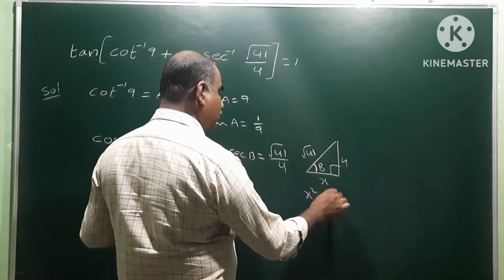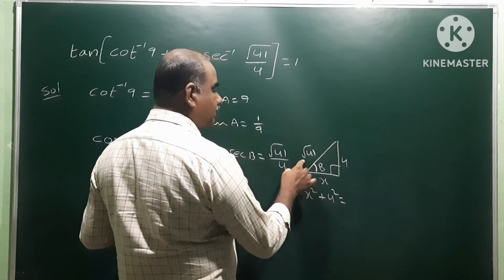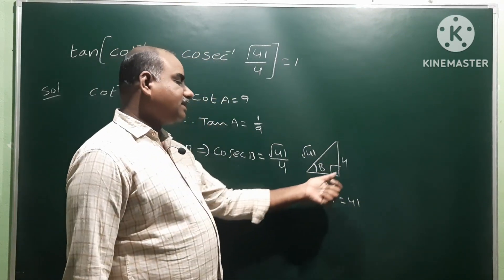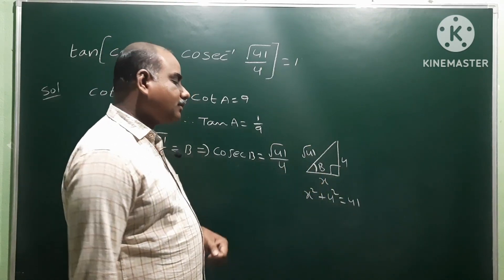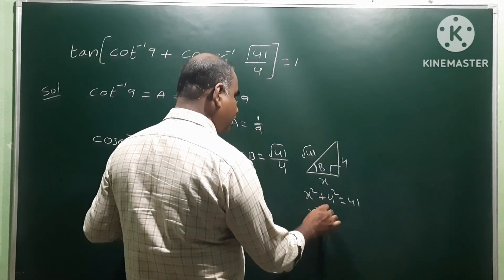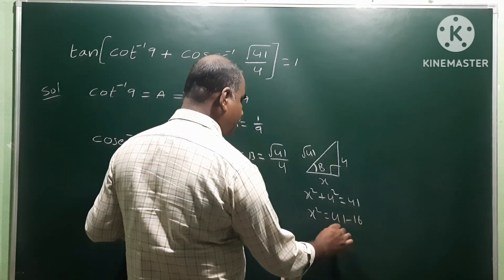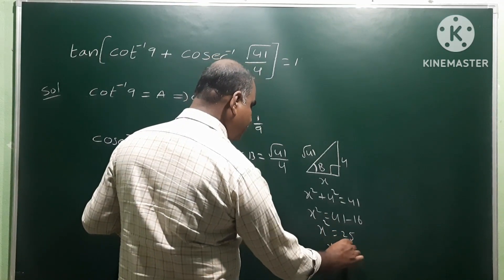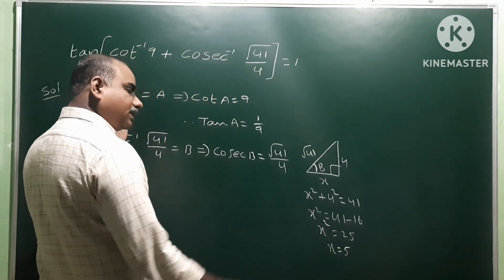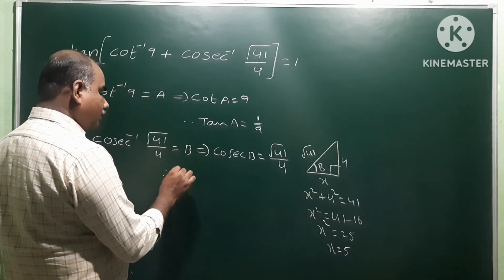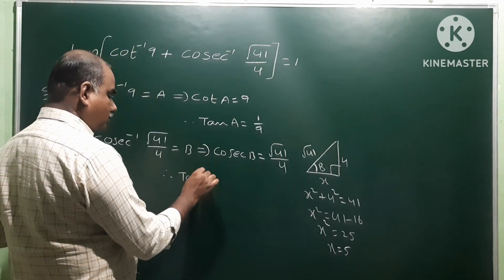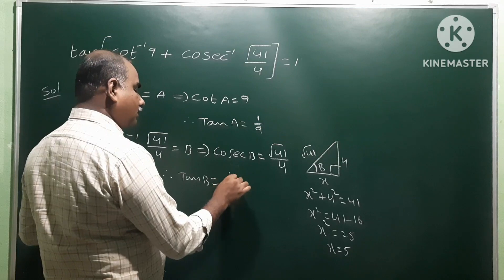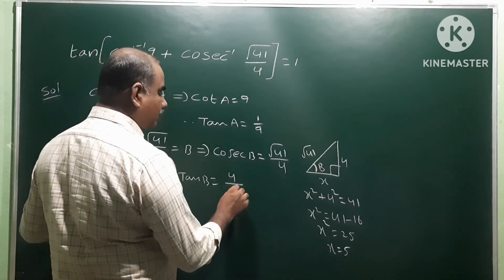By the Pythagorean theorem: x² + 4² = (√41)² = 41. The sum of squares of the adjacent sides equals the square of the hypotenuse. Therefore x² = 41 - 16 = 25, so x = 5. Therefore tan(b) = opposite/adjacent = 4/5.